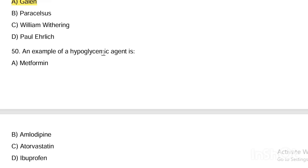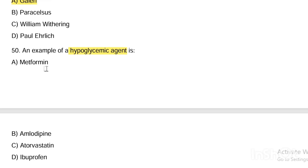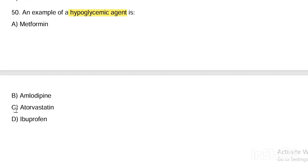Next question. An example of a hypoglycemic agent is: Option A, metformin. Option B, amlodipine. Option C, atorvastatin. Option D, ibuprofen. Answer is Option A — metformin. Amlodipine is a calcium channel blocker for hypertension; atorvastatin is for hyperlipidemia; ibuprofen is a NSAID.